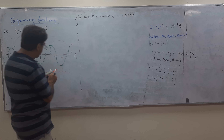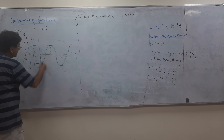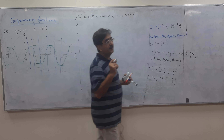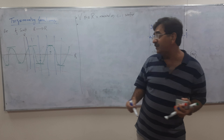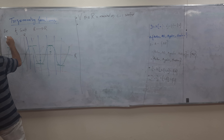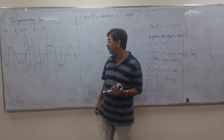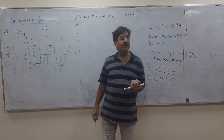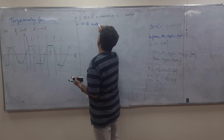Similarly, if I draw a line parallel to the y-axis, no point will be repeated — only a single point will be intersected. That is the condition: if we draw parallel lines, all lines will intersect at only one point. This means the second condition C2 is also satisfied.